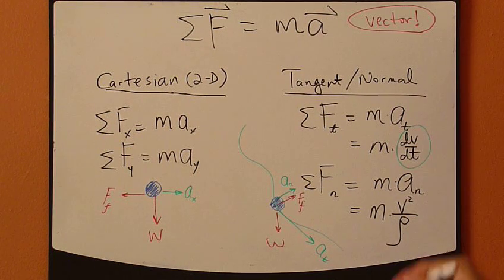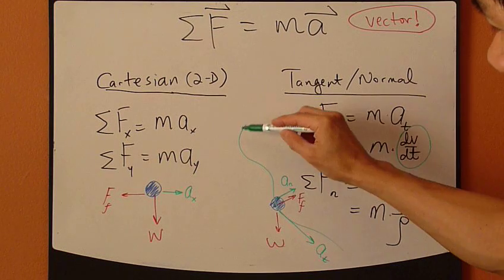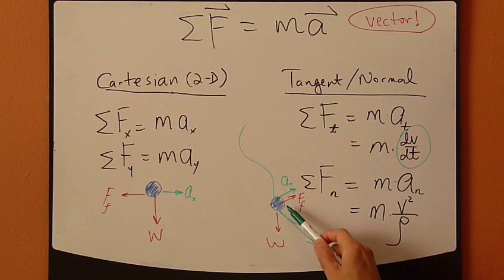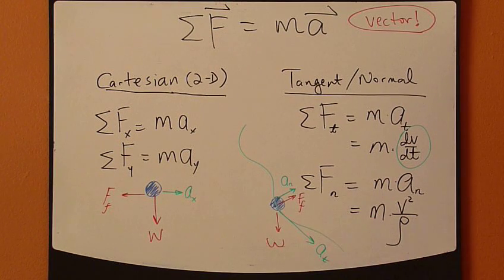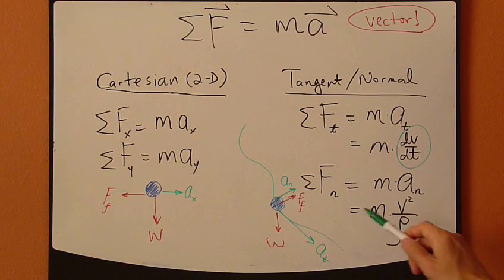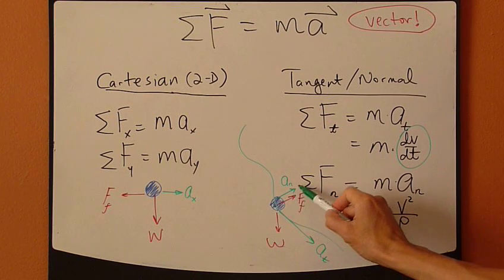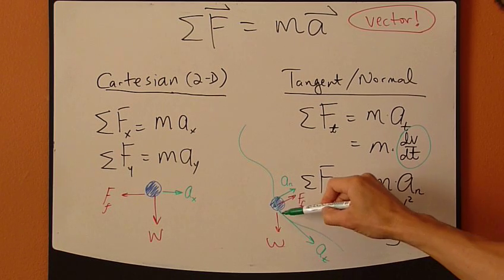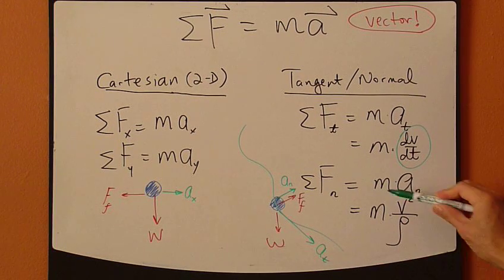For example, you have this particle driving along this curved path, and subject to friction force and maybe weight, and maybe some other forces too. And then the resulting motion is normal component of acceleration, AN, as well as tangent component of the acceleration.